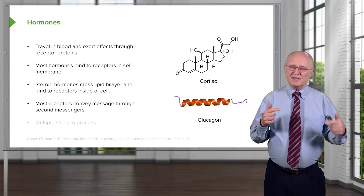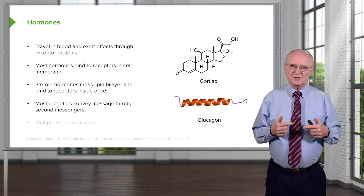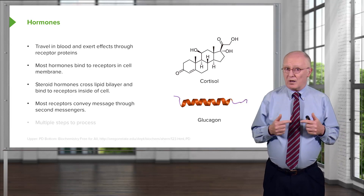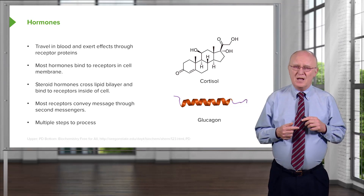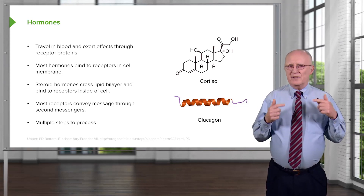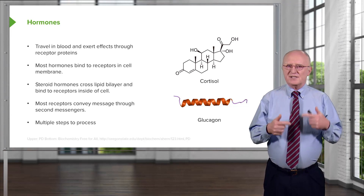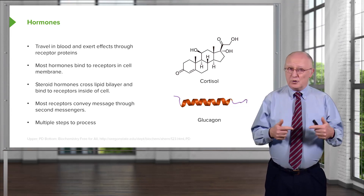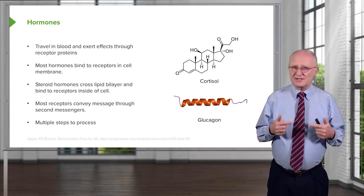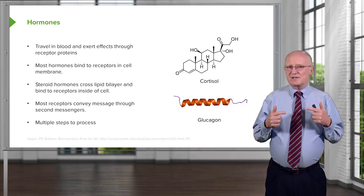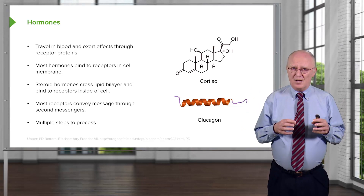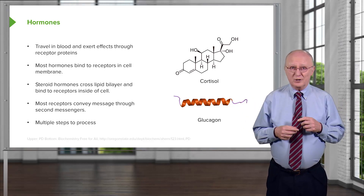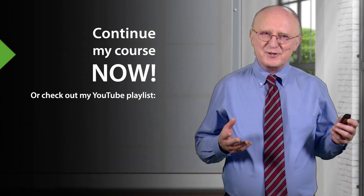Most receptors convey their message through what are called second messengers — small molecules found inside the cell. Something that surprises people studying hormone signaling is that there are usually very many steps to the process. Those many steps give the cell flexibility to respond to many different kinds of messages, but it makes it pretty hard for students to learn because there's a lot to remember.